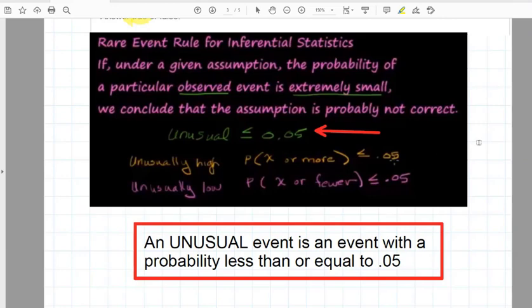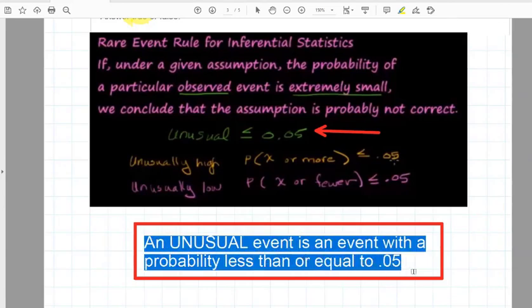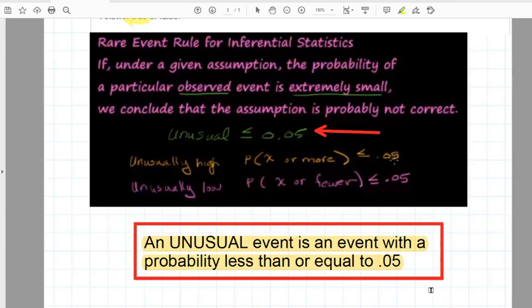which we're not talking about now, but we will be, this value of 5% is the most commonly used level of significance. So in this case, we can use this definition: an unusual event is an event with a probability less than or equal to 5% or 0.05.